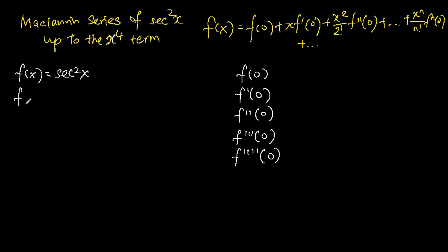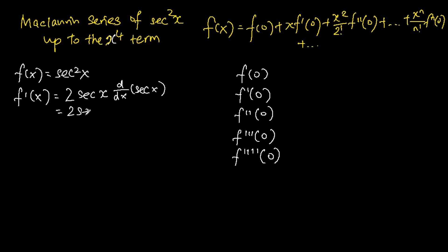So f prime x is actually just 2 secant x, and then we differentiate the secant x. We know that the differentiation of secant x gives us 2 secant x times secant x tangent x, which when simplified is just 2 secant squared x tangent x.